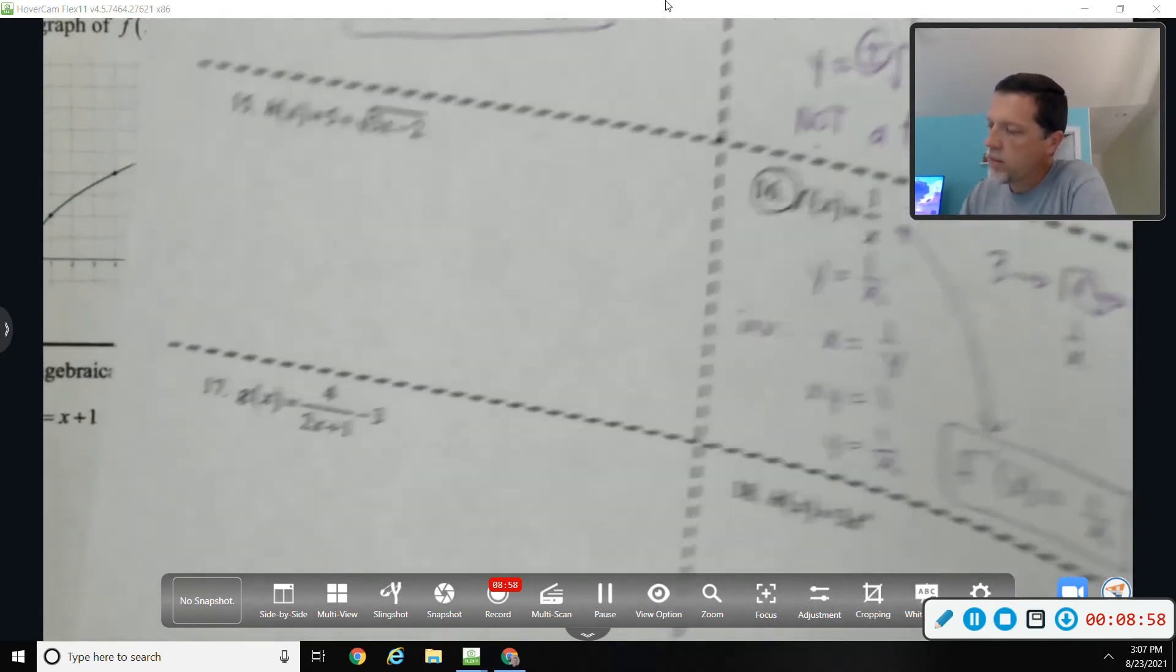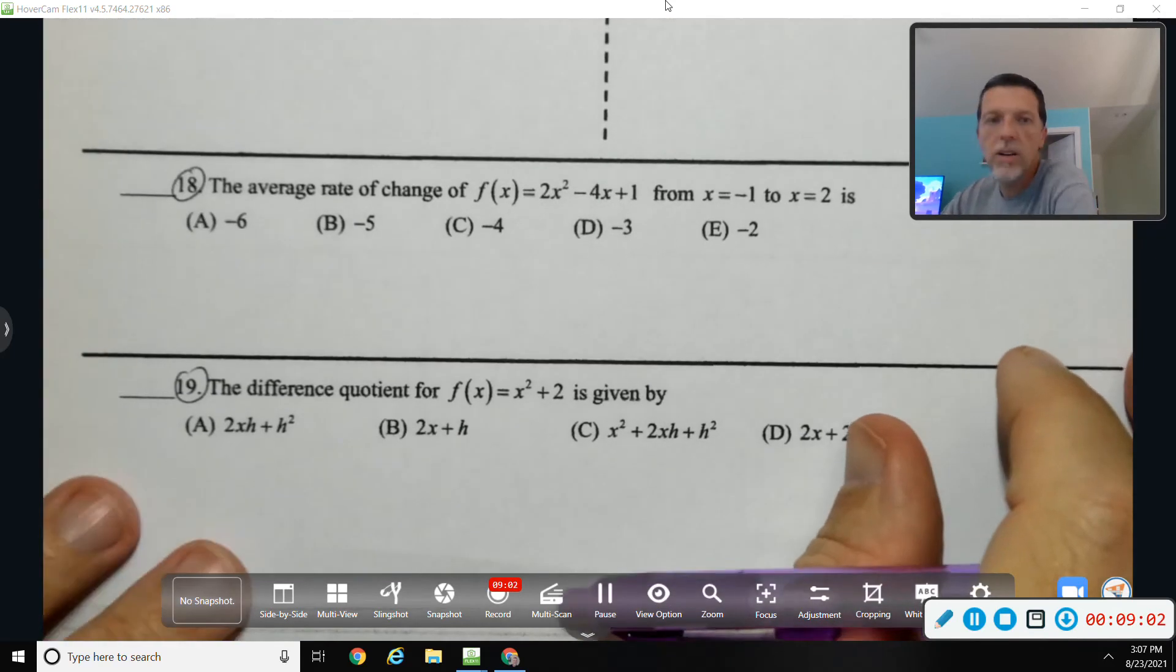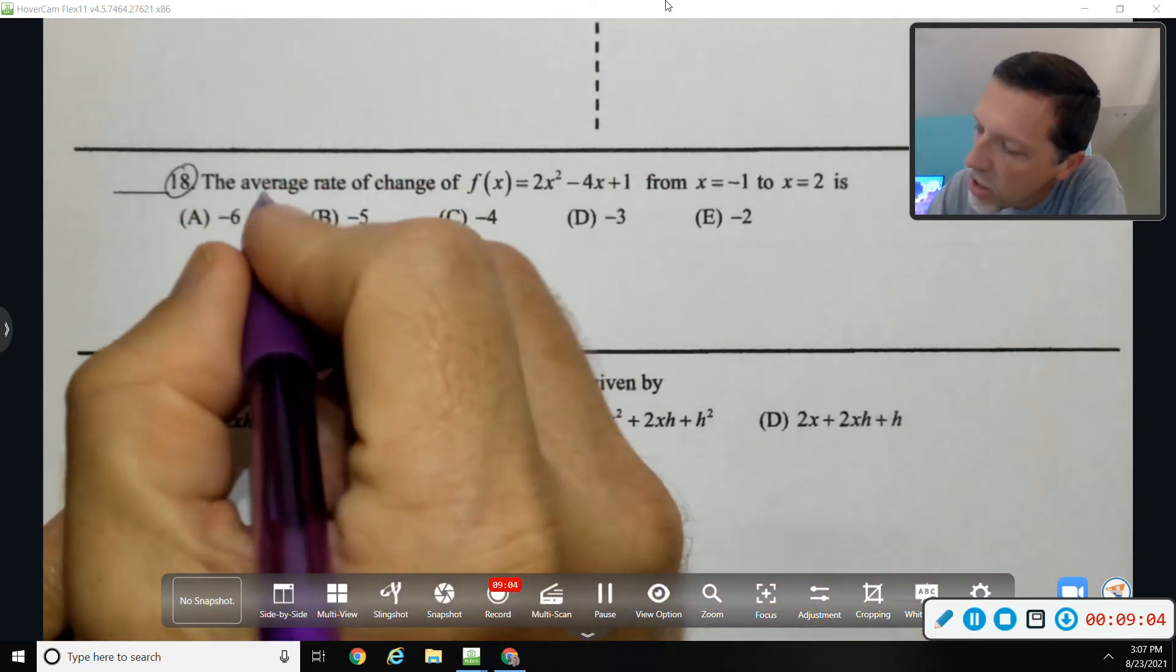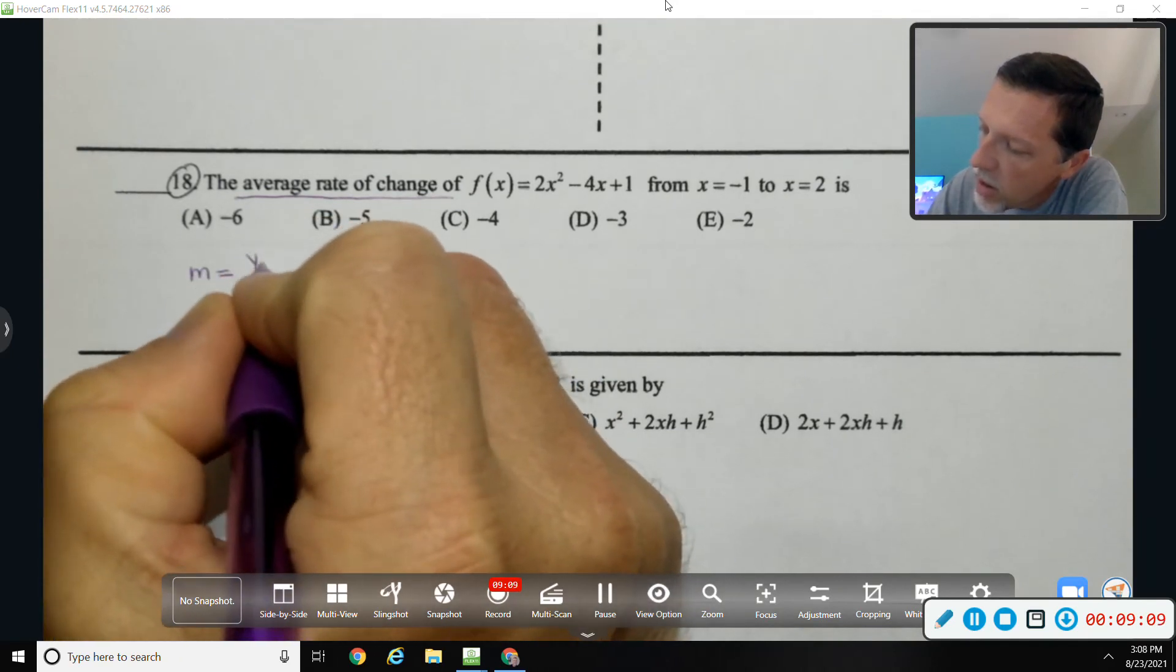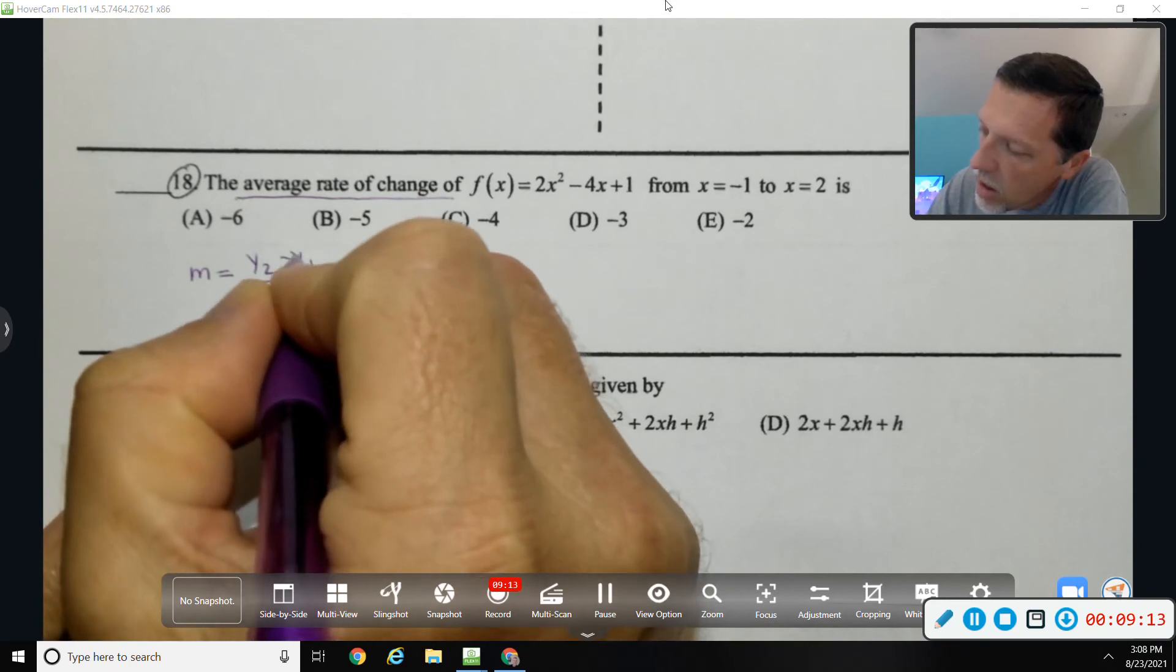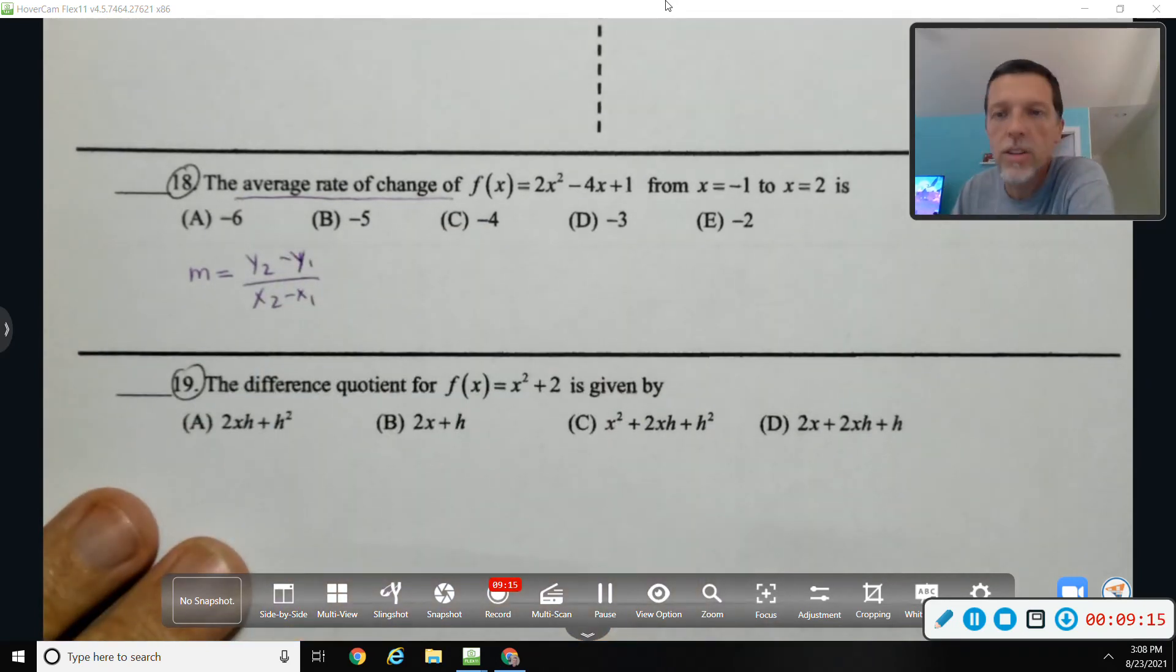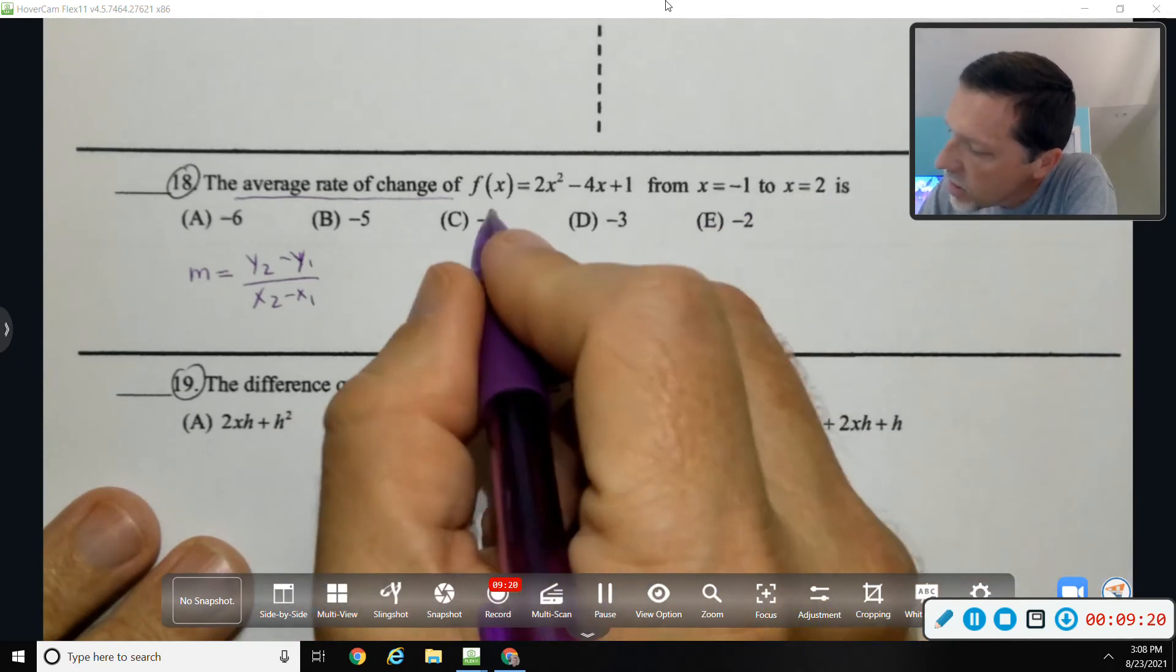Skip down to number 18 and 19, just because those questions haven't seen them in a while. Average rate of change—remember, that's fancy words for slope.